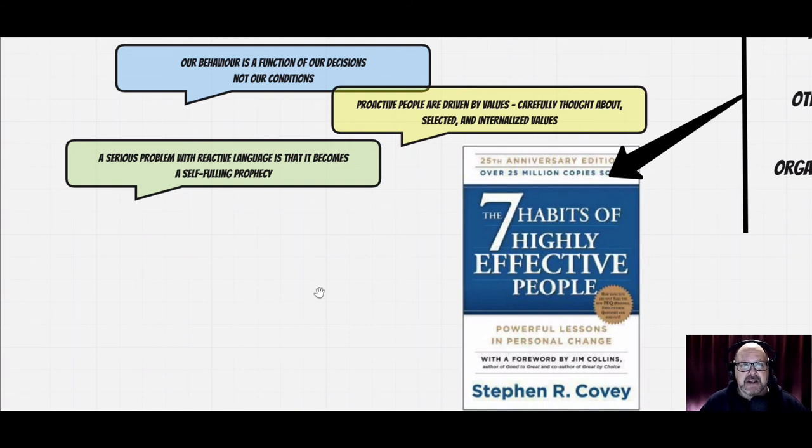A third quote I wanted to share is a serious problem with reactive language is that it becomes a self-fulfilling prophecy. In another chapter in organizational behavior, this idea of self-fulfilling prophecy is that we begin to form perceptions even without full knowledge. Those perceptions begin to affect the way we behave, and our behavior begins to affect those around us. Then we find that those people who are affected by us begin to behave in patterns which we formed before we even engaged in our activities.